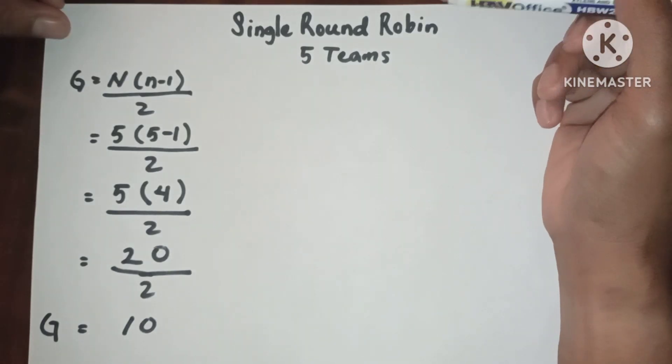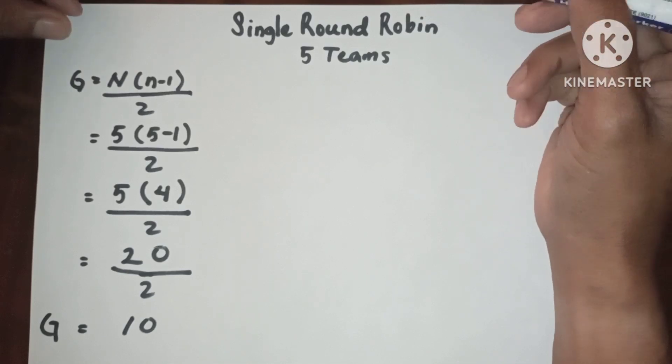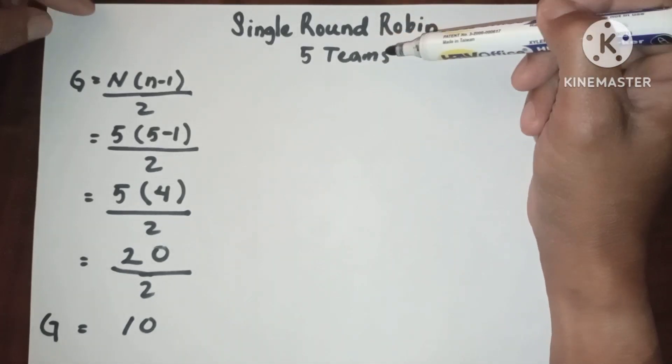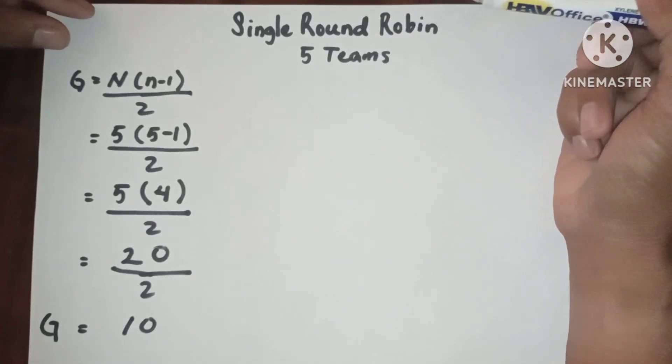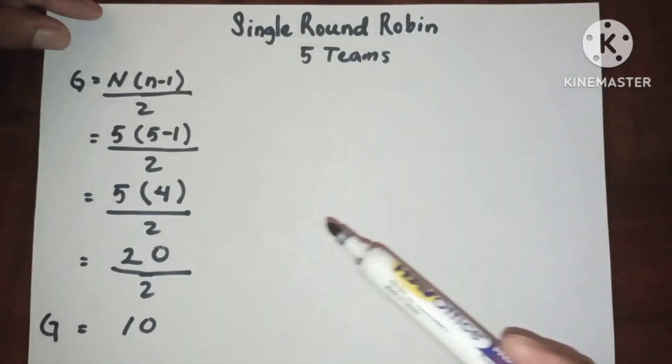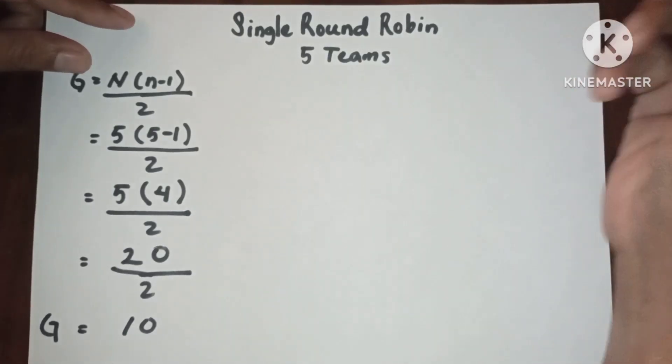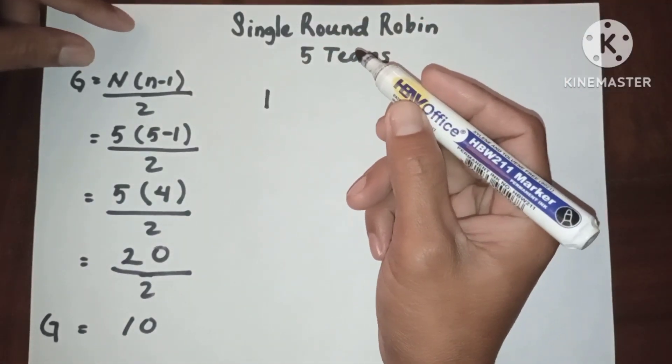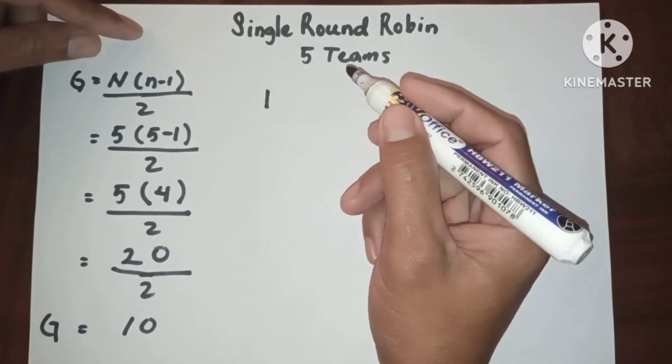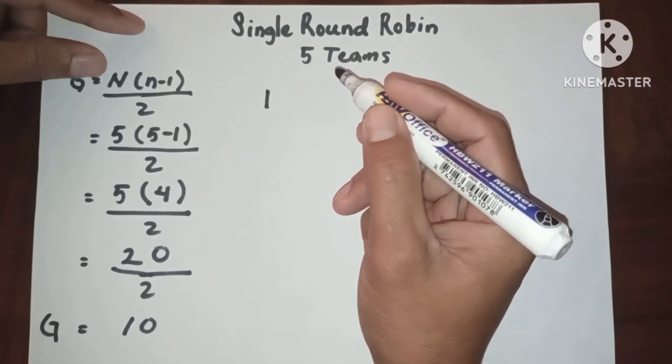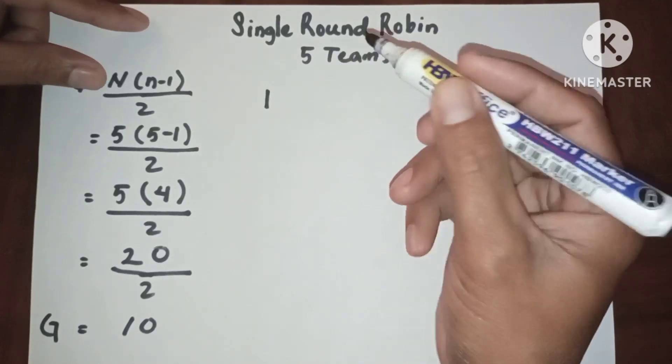Hello everyone, this is single round robin for five teams. In five teams we have ten games. Now let's proceed to round one. Always remember that when you're writing the number of teams, it must be written in two vertical columns: the first column and the second column.